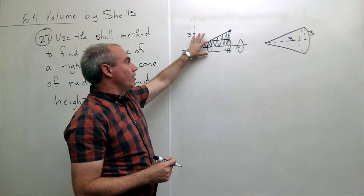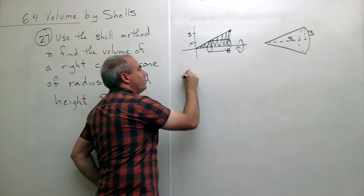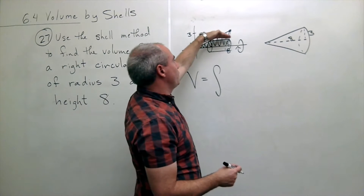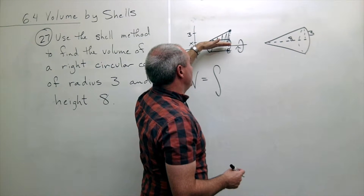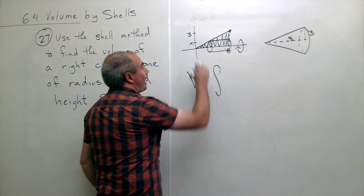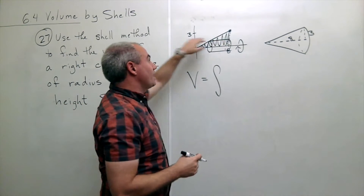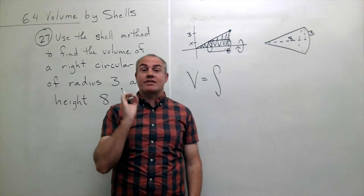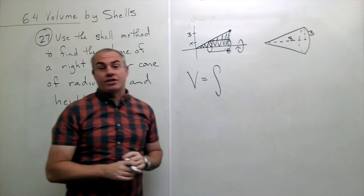You can see a typical shell right here — I'll say that's at a typical y value. Using the shell method, volume equals the integral from... what are we integrating to and from? When I make these horizontal slices, where do I start cutting and where do I stop? I start cutting at y equals zero and I stop cutting at y equals three. The chops I'm making cut up the y-axis, not the x-axis, so everything inside the integral must involve y, including the limits of integration.